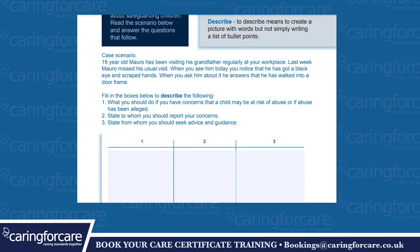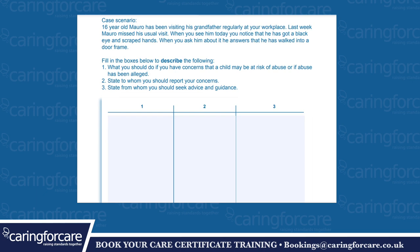Case scenario. 16-year-old Marrow has been visiting his grandfather regularly at your workplace. Last week Marrow missed his usual visit. When you see him today you notice that he's got a black eye and scraped hands. When you ask him about it, he answers that he walked into a doorframe. Fill in the boxes below to describe what you should do if you have concerns that a child may be at risk of abuse or abuse has been alleged, state to whom you should report your concerns, and state from whom you should seek advice and guidance.